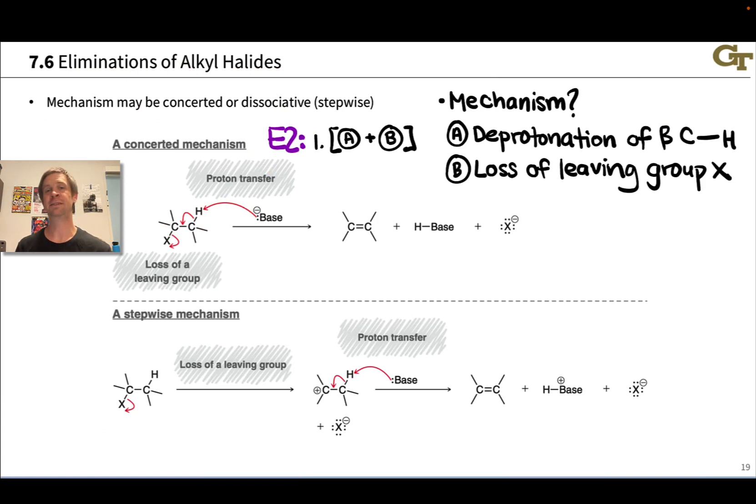It's also possible to imagine the leaving group leaving before deprotonation occurs. This is a stepwise dissociative mechanism called E1. In an E1 mechanism, loss of the leaving group X occurs first, followed in a separate elementary step by deprotonation of the beta CH. In fact, this beta CH becomes much more acidic after loss of the leaving group and formation of a carbocation right here. As in the SN1 reaction, a carbocation intermediate is involved in the E1 reaction, and is absolutely key to things like the rate and regioselectivity of the reaction.